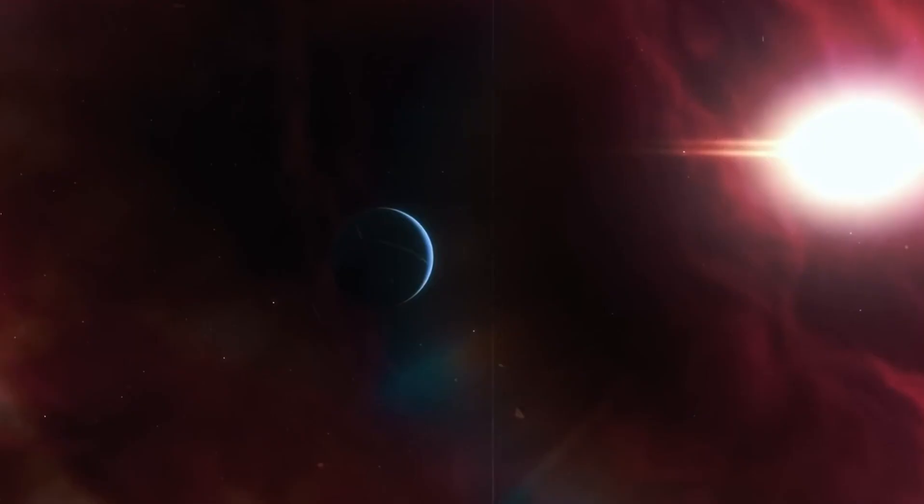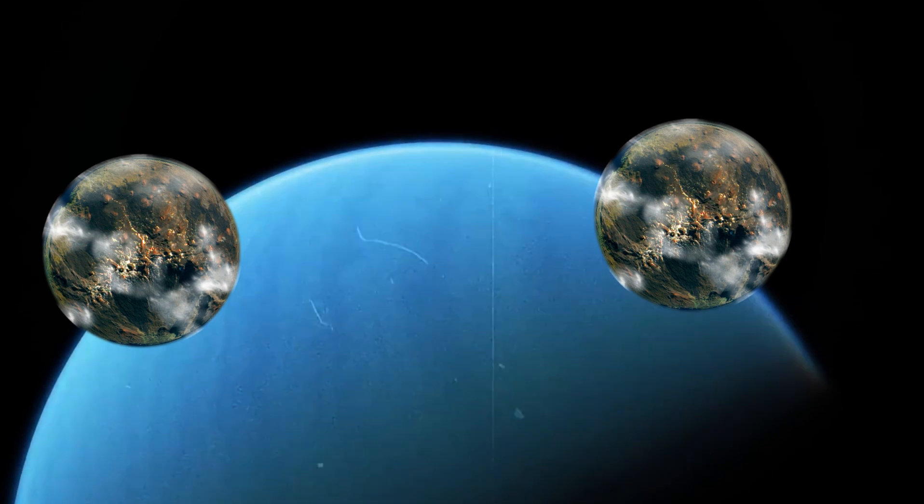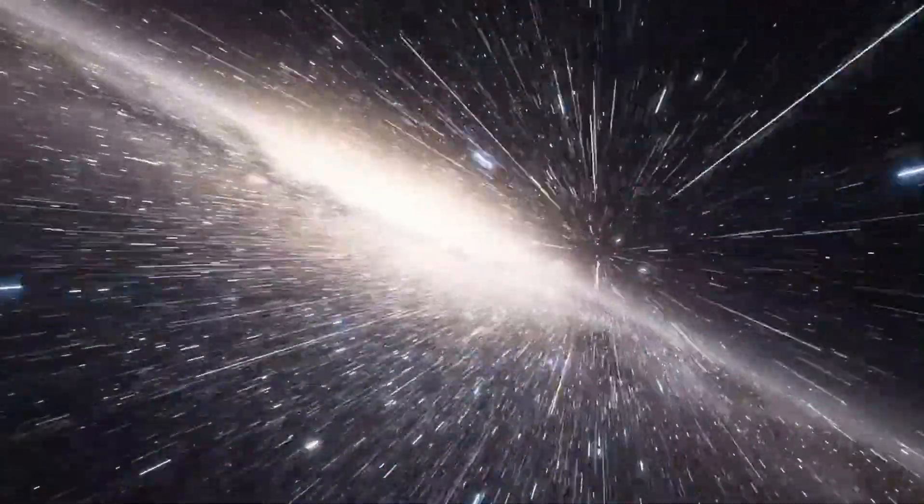The K2-18b star system consists of a rather small star and two exoplanets. The James Webb Telescope has now discovered signs of life on the exoplanet K2-18b.